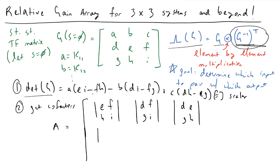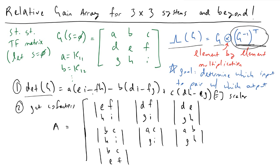Continuing the cofactor matrix: covering row two and column one gives the determinant of [B, C; H, I]. Covering row two and column two gives [A, C; G, I]. Covering row two and column three gives [A, B; G, H]. Then for row three: covering column one gives [B, C; E, F]; covering column two gives [A, C; D, F]; and covering column three gives [A, B; D, E]. I know this is a lot to write down, but this is how we calculate the inverse of matrix G.